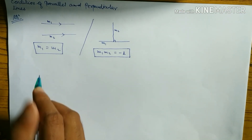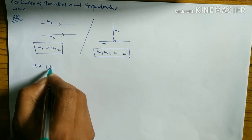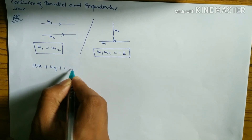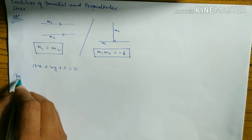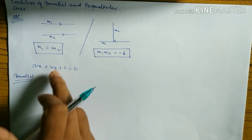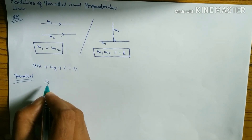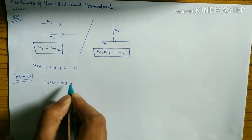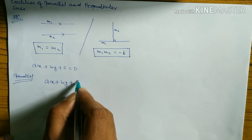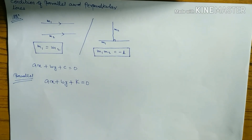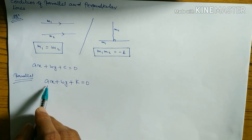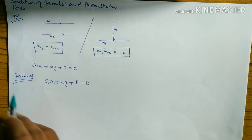Suppose we have a line: ax + by + c = 0. Any line parallel to this line can be written as ax + by + k = 0. We just have to replace the constant c with k. So for a parallel line, the coefficients of x and y remain the same — only the constant changes from c to k.